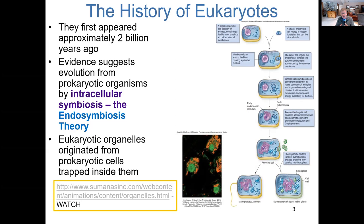A different cell that was phagocytized became the modern-day chloroplast. That ancestral larger prokaryotic eventually evolved into a eukaryotic cell. There's about a one-and-a-half to two-minute video that will walk you through this process.